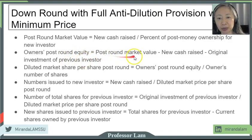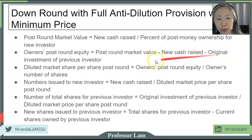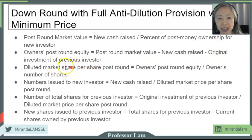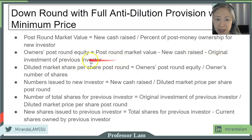The one equation I want to point your attention to is the owner's post-round equity. This equation shows you that the owner takes all the losses. The post-round market value minus the new cash raised — which is the investment from the new investor — minus the original investment of the previous investor. So the new investor gets whatever they put in, the old investor did not lose any of their investment, and all the losses were borne by the owner.